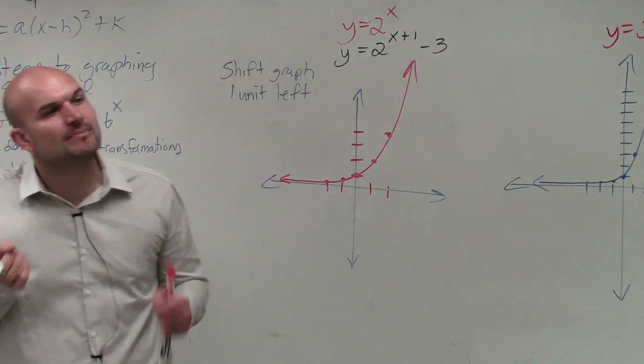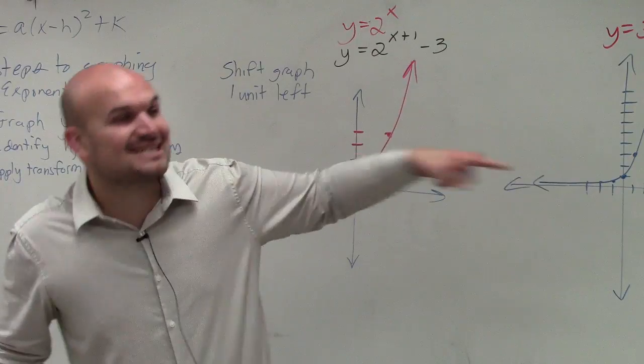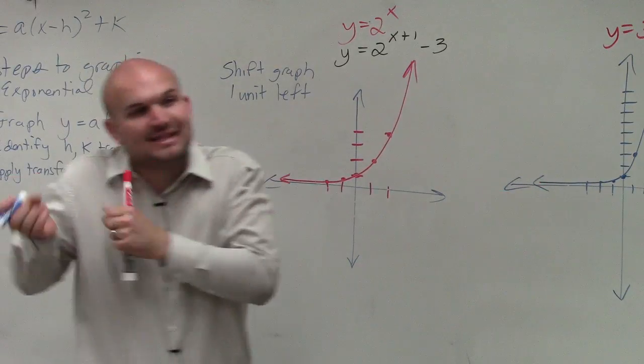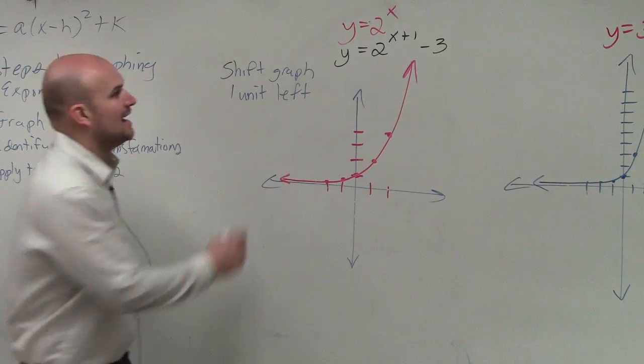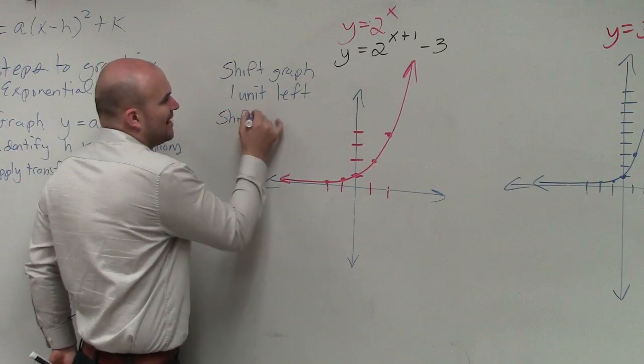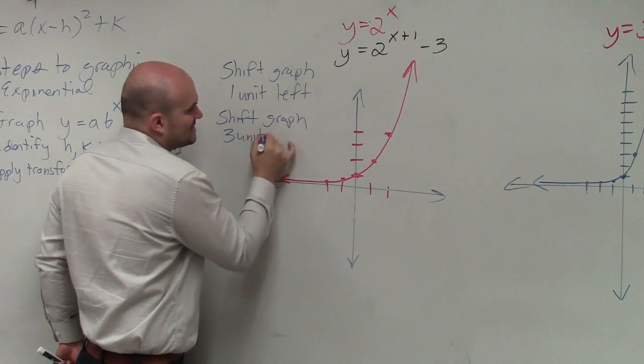Please make sure you guys remember when it's inside the function, it's the opposite. Remember, it's x opposite of h. So whatever that h is, you're going in the opposite direction. So you're shifting the graph one unit to the left, and you're now going to shift the graph three units down.